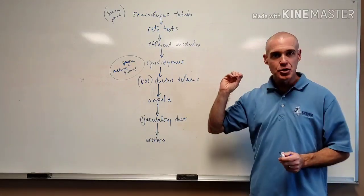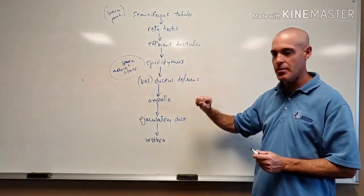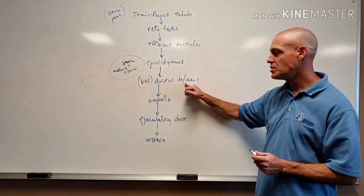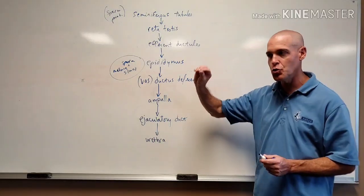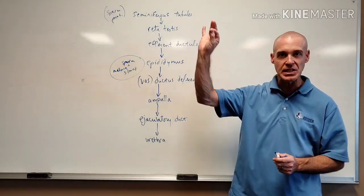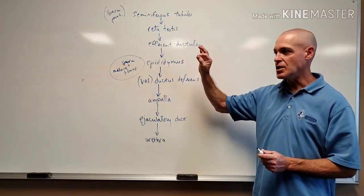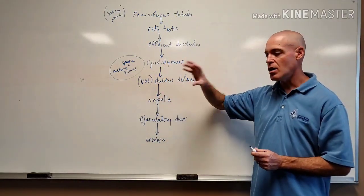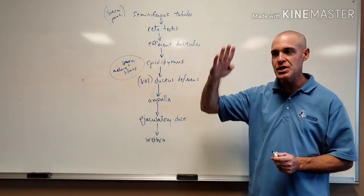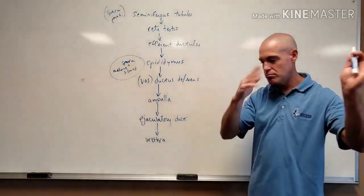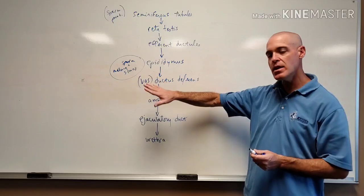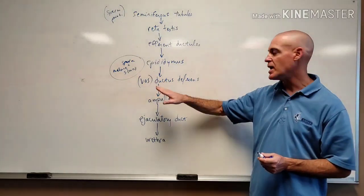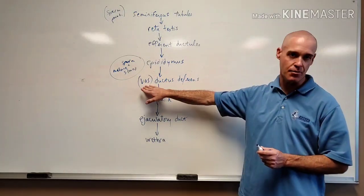So when sperm leave the testes, leave the epididymis, they're going to go through the ductus deferens. This is literally the tube that leads away from the testes. And it's going to go through a connective tissue sheath, which we can talk about in a little bit. But many people don't remember this as the ductus deferens. They remember it as the vas deferens.